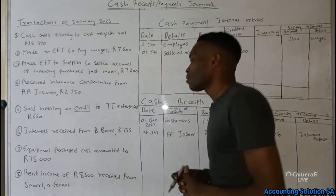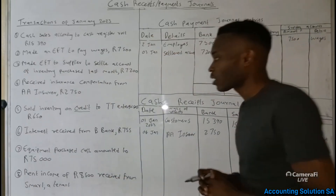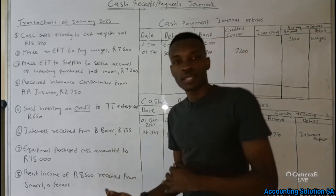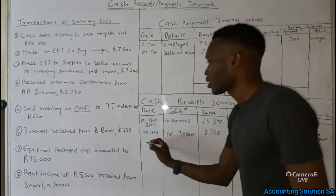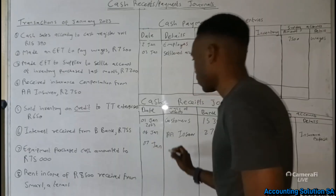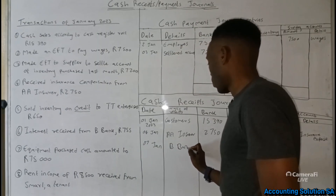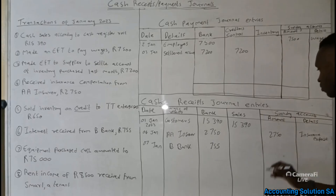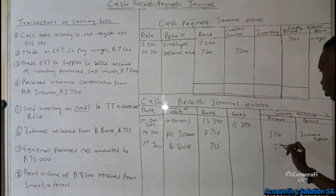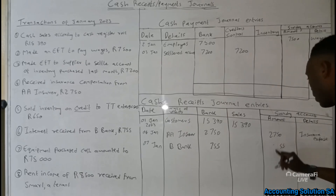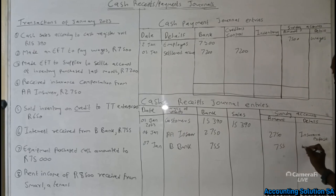Transaction number six: interest received from B Bank of 755 has been received. We receive the interest, which means this is cash receipts general. Date is 7 January, details show B Bank. The amount is 755. Because we do not have a column for interest received, we go to the sundry account and write 755 as interest received.